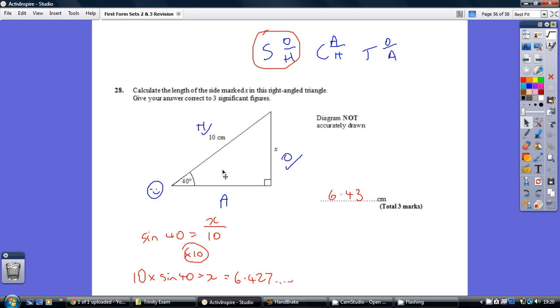So go and tick the two sides that you either know, which is the hypotenuse, or the question requires you to work out. That's the opposite side. We've ticked O and H. So which of the three ratios are we going to be using is this one.